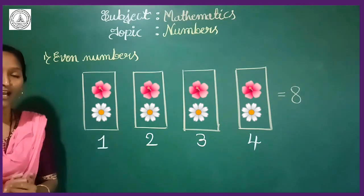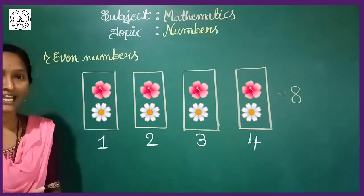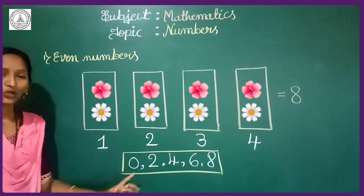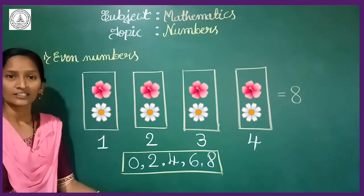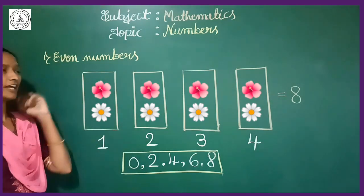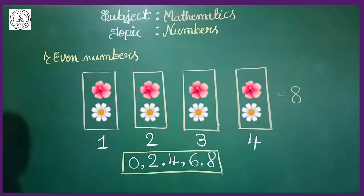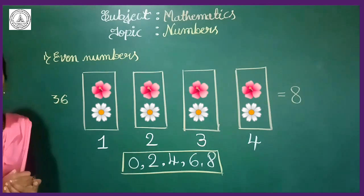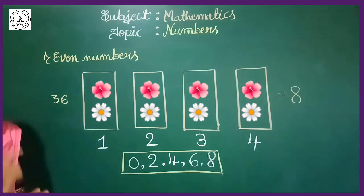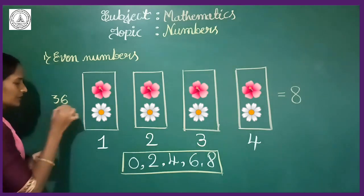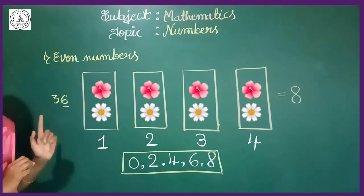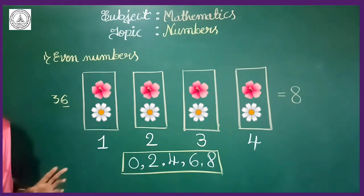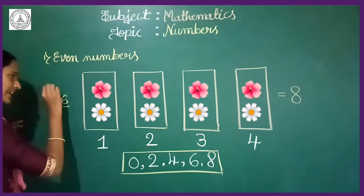How can you identify if a number is even? Here is one clue: the numbers that end with 0, 2, 4, 6, or 8 are called even numbers. For example, take the number 36. Observe the 1's place first. In 36, which number is in 1's place? That is 6. The number ends with 6, so you can easily say it is an even number. Next example — take 75. Observe the 1's place: it is 5. It is not even. Then which number is it? It is an odd number.